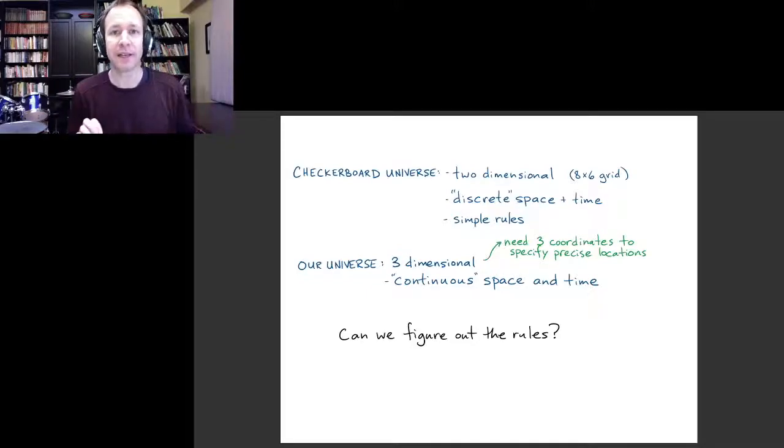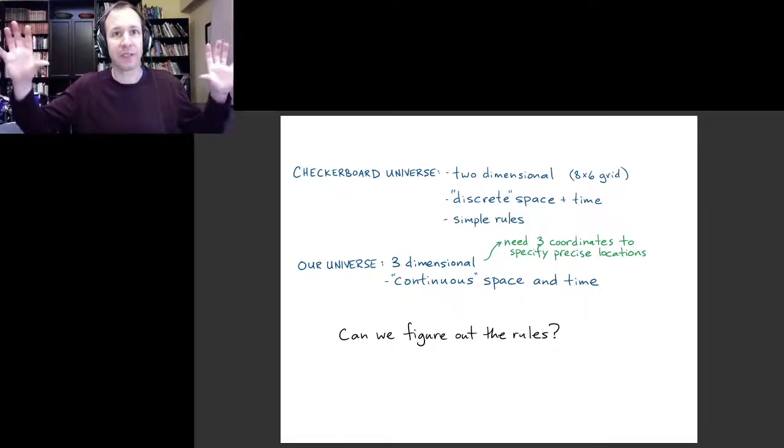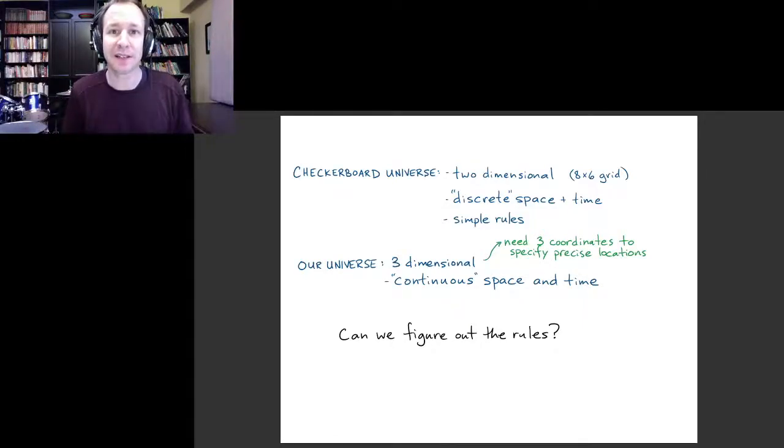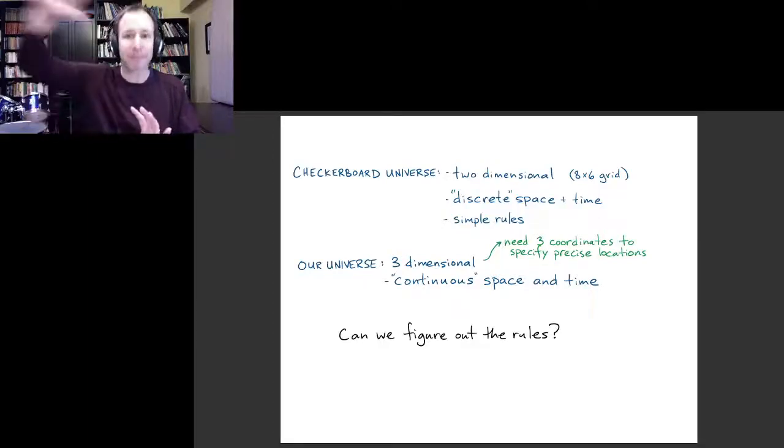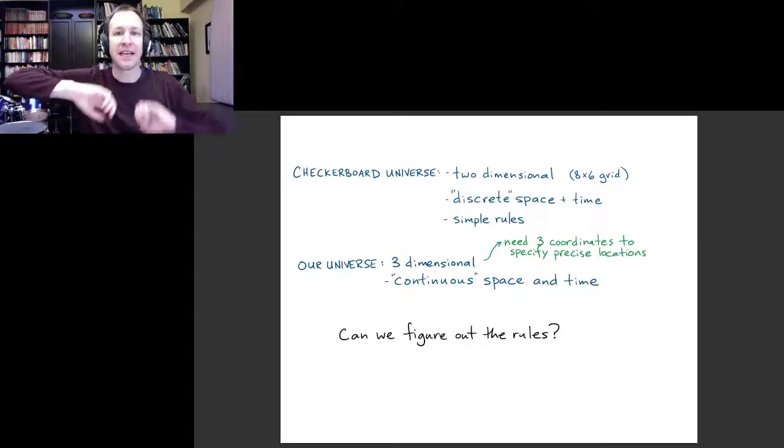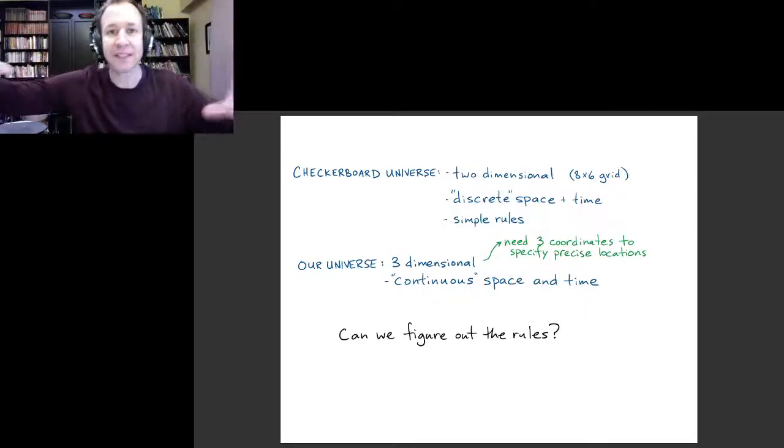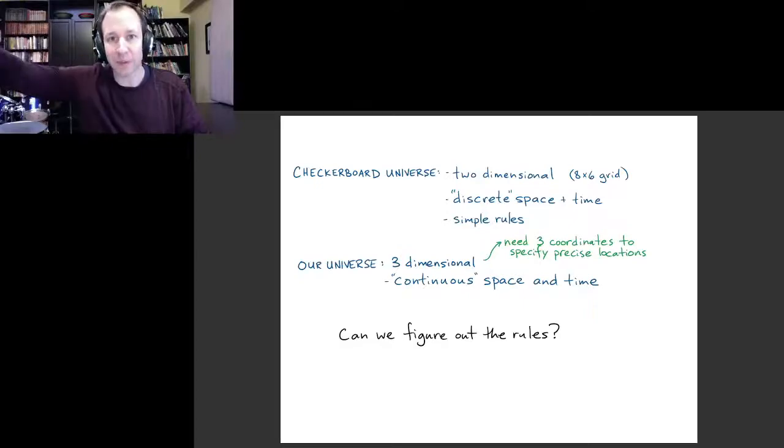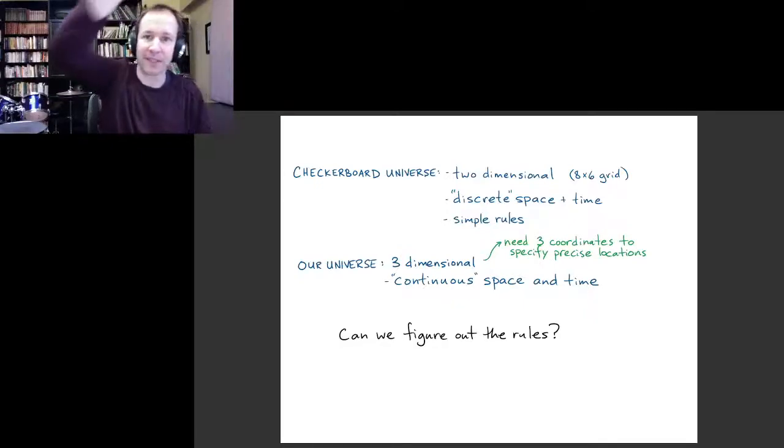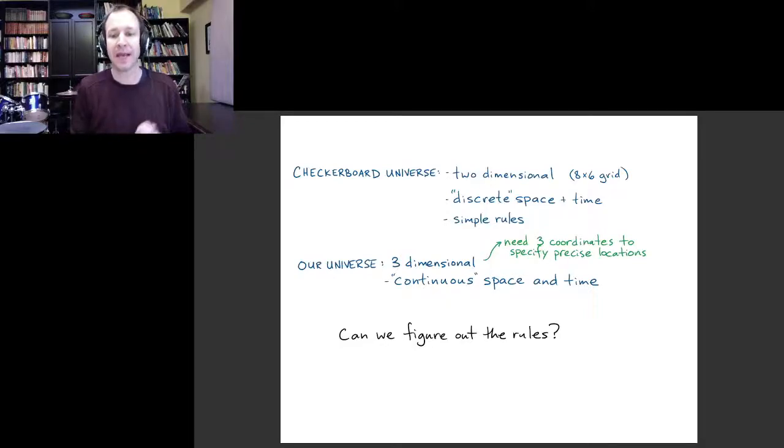It turns out that our universe is fairly complicated, but we can best start to understand the rules by thinking about how things behave in a very simple environment, in the simplest possible environment. Going back to the checkerboard situation, there were already simple rules, but the rules would be even simpler in an environment where you only had the white squares. In that case, the happy face would just keep going in the same direction forever. In our universe, similarly, we could imagine a simplified environment and start by understanding how things behave in that simplified environment.